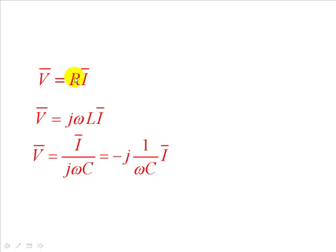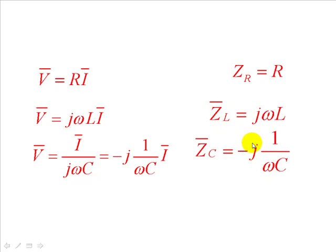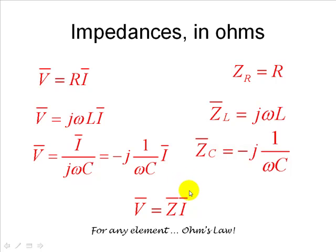In either case, v is something times i. Why? Well, let's call R the impedance of the resistor. And let's call jωL the impedance Z of the inductor. And let's call -j, 1 over ωC, the impedance of the capacitor, Zc with a hat. If we do that, we can say that in any element, the voltage phasor is the impedance Z times the current phasor. Z is the impedance in ohms of each one of those elements. And we have that, again, as the generalized Ohm's law. Impedances are measured in ohms and are given by those formulas.